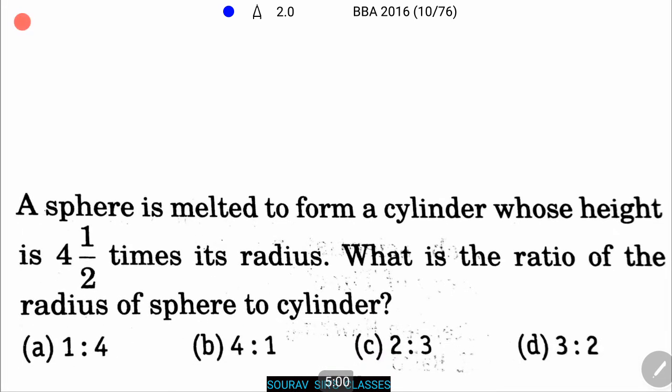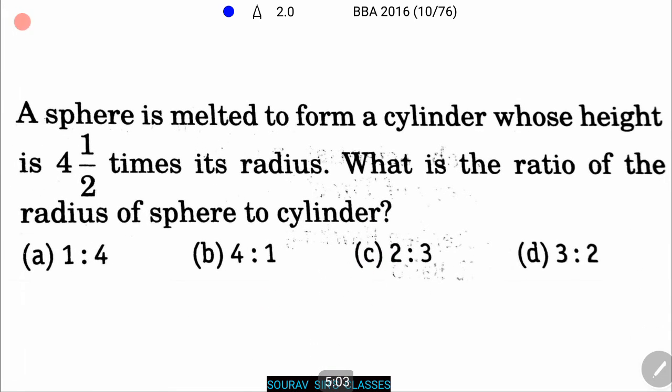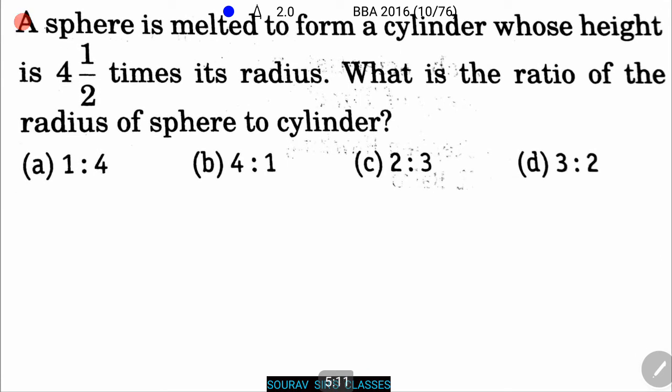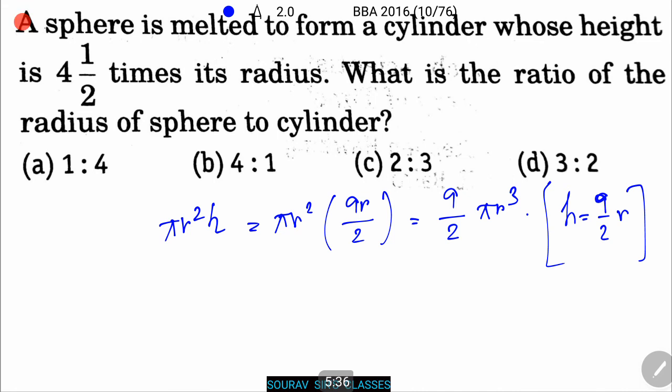A sphere is melted to form a cylinder whose height is 4 and a half times its radius. What is the ratio of the radius of sphere to cylinder? Here are the four options: 1 is to 4, 4 is to 1, 2 is to 3, and 3 is to 2. Now, the volume of the cylinder equals pi R squared H. That means pi R squared 9R by 2, that equals 9 by 2 pi R cubed, where H equals 9 by 2 R.